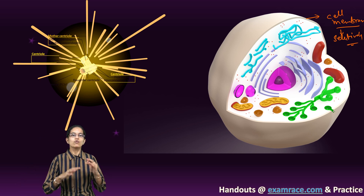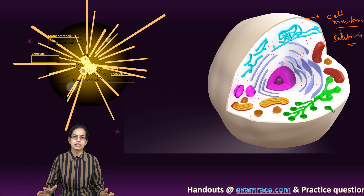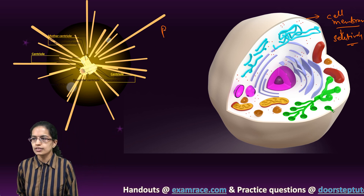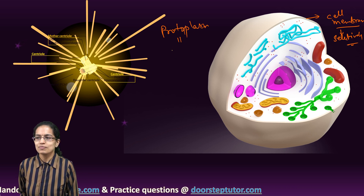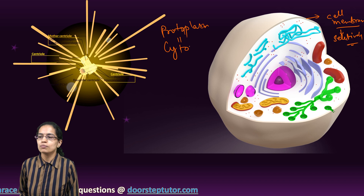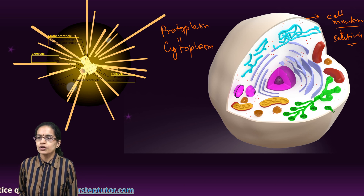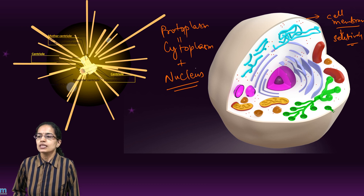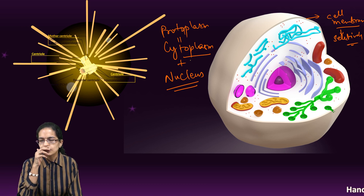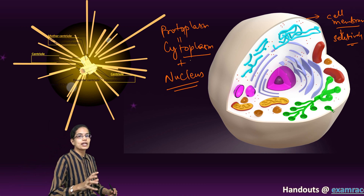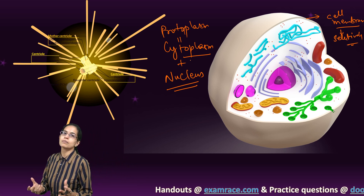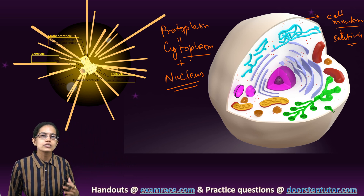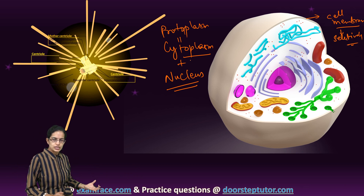Within the cell membrane, whatever is present is known as protoplasm. Protoplasm is made up of cytoplasm plus nucleus. We would be talking about both of these constituents one by one. Cytoplasm is made up of a kind of fluid material that is present within the cell membrane and has numerous organelles which are present within it.